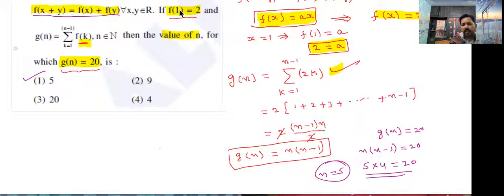But g of n value is 20 given. G of n is equal to 20, n into n minus one is equal to 20. When the condition satisfied if you are taking n value five. This model also very very important. Okay these are all questions in JEE Mains 2020 September. Okay students thank you.